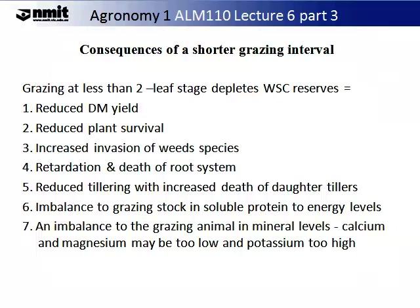Consequences of a shorter grazing interval — less than the two-leaf stage — can be quite significant because it depletes water-soluble carbohydrate reserves. Once depleted, you get reduced dry matter yield, a dramatic fall in plant survival, increased invasion of weed species, retardation or death of the root system, reduced tillering with increased death of daughter tillers, an imbalance of soluble protein to energy levels, and an imbalance in mineral levels — calcium and magnesium may be too low while potassium may be too high. These consequences have significant impacts on a commercial enterprise.